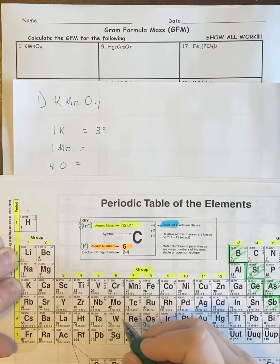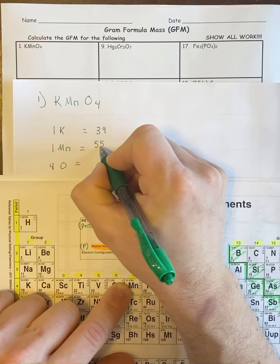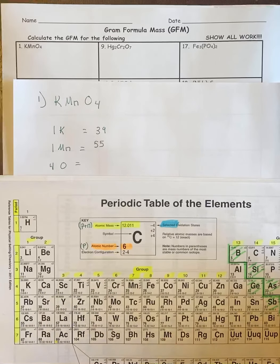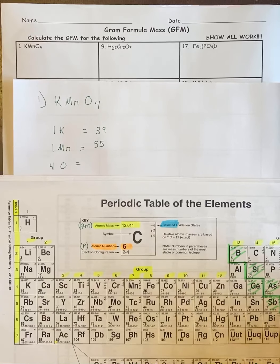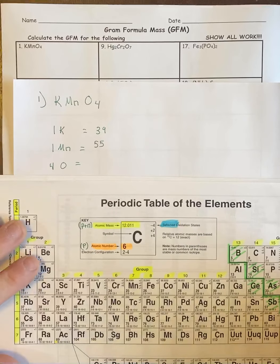K is 39. Mn is 55. And four oxygens is 64.